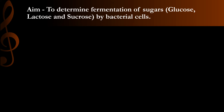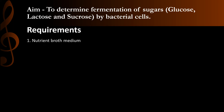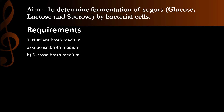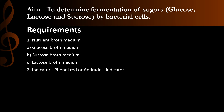The aim of the carbohydrate fermentation test is to determine fermentation of sugars like glucose, lactose, and sucrose by bacterial cells. The requirements are: first, three nutrient broths with three different sugars — glucose broth medium, sucrose broth medium, and lactose broth medium. Second, an indicator — phenol red or Andrade's indicator. Third, Durham's tube, which is used for detection of gas production. Fourth, bacterial culture.